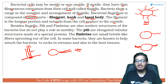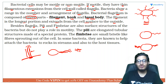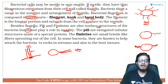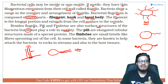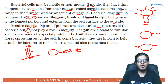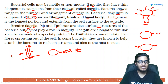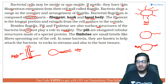Besides flagella, two other surface structures called pili and fimbriae can also be present on bacterial cells. They do not play a role in motility. In fact, a NEET 2014 question asked which structure is responsible for motility — whether cilia, flagella, pili, or fimbriae. The most correct answer is flagella, because it is large enough to move the entire cell.